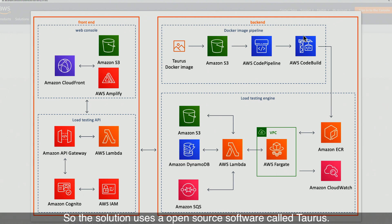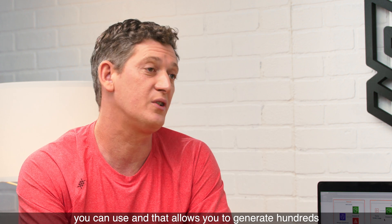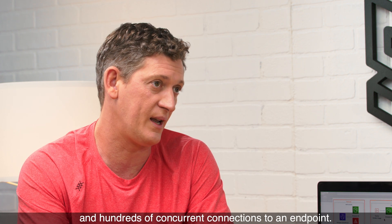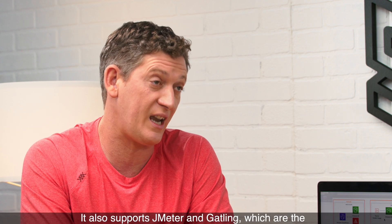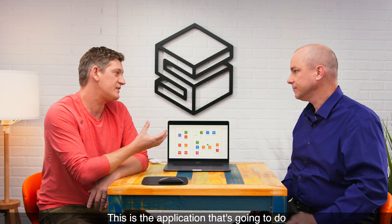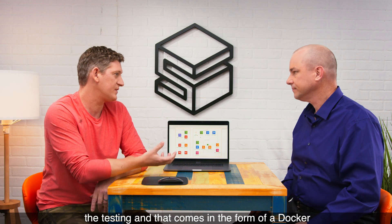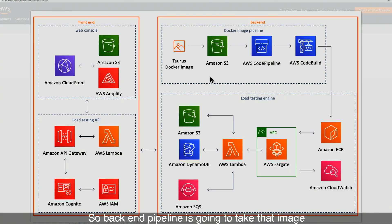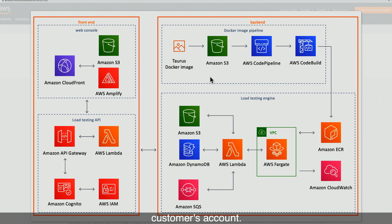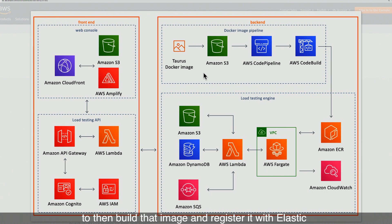The solution uses an open source software called Taurus. There is a Docker image available on Docker Hub that you can use, and that allows you to generate hundreds and hundreds of concurrent connections to an endpoint. It also supports JMeter and Gatling, which are other testing tools that are very common in the market. That Docker image is the application that's going to do the testing. Our back end pipeline takes that image, packages it up, and pushes it out to S3 in the customer's account. Then we use CodePipeline and CodeBuild to build that image and register it with our Elastic Container Service.